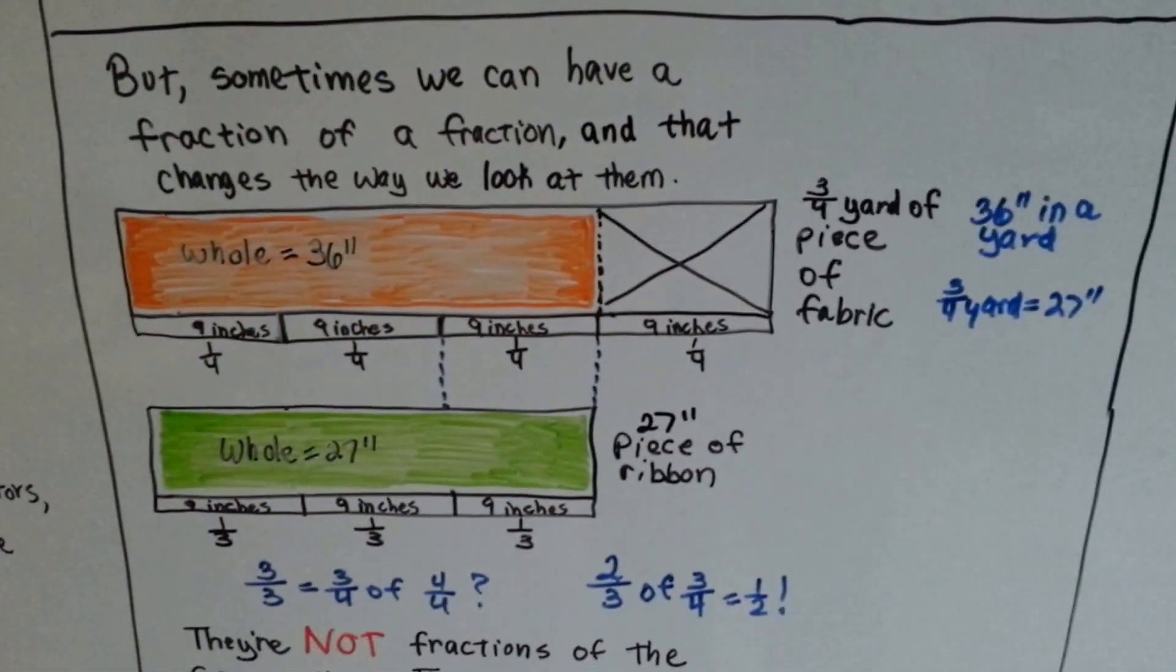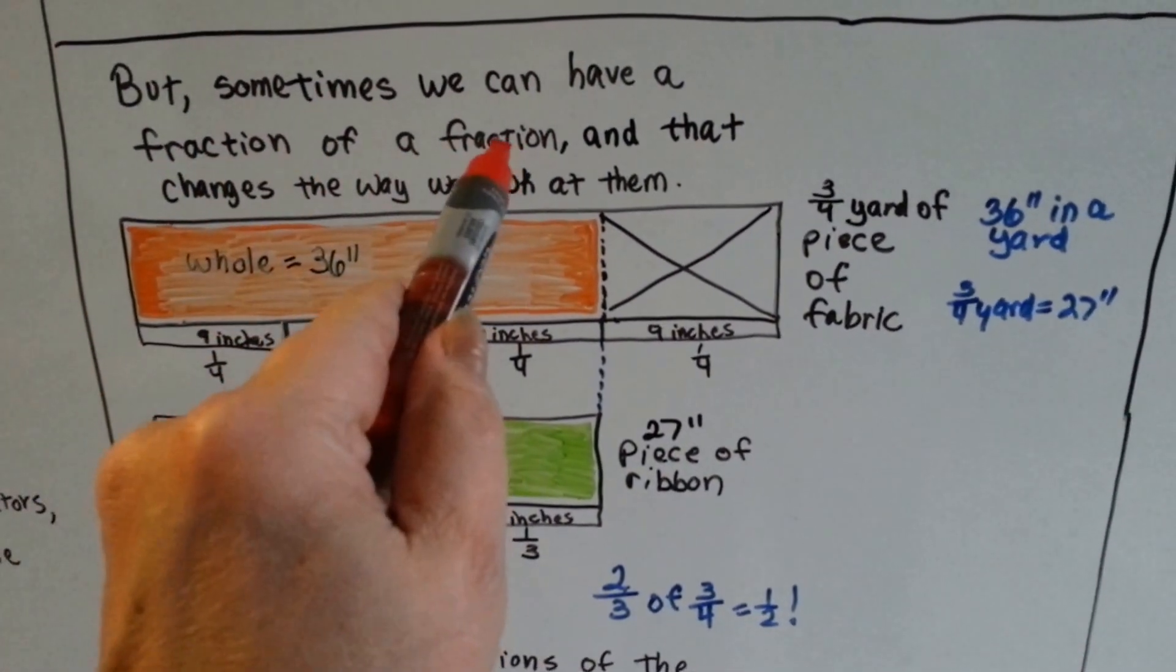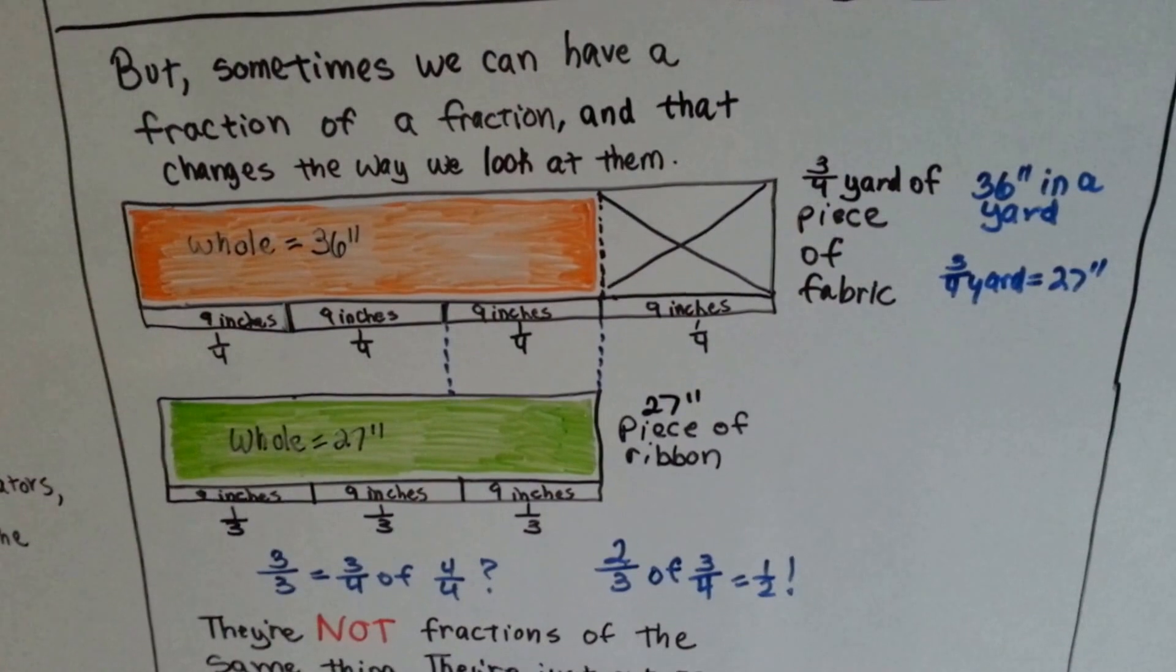But sometimes we can have a fraction of a fraction. And that's the key word. A fraction of a fraction. And that changes the way we look at them.